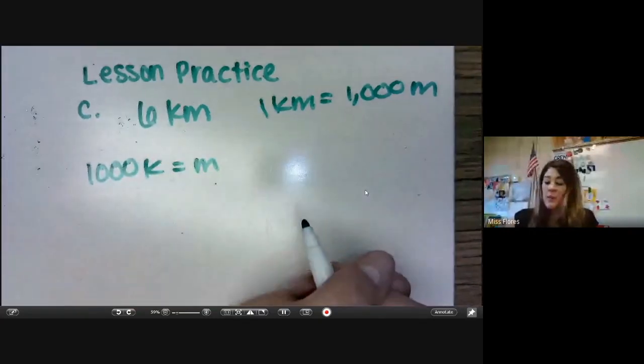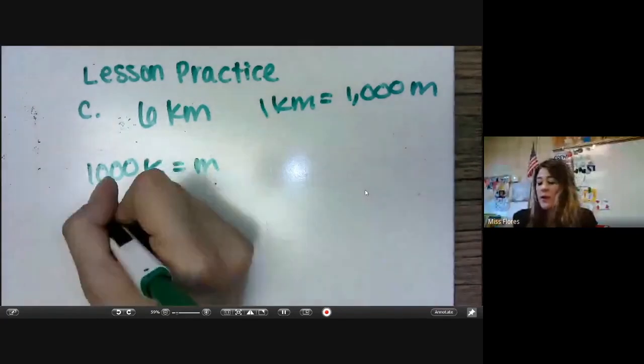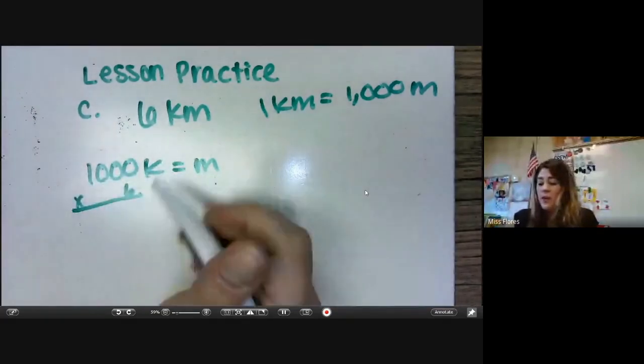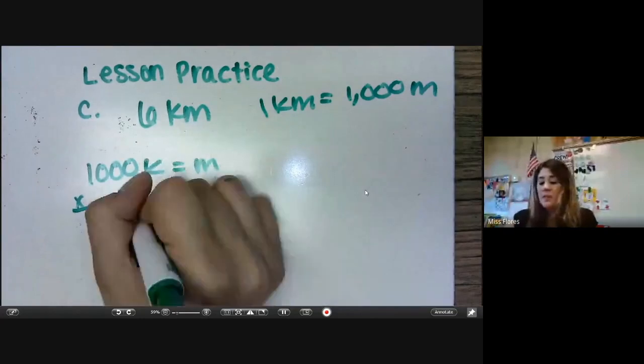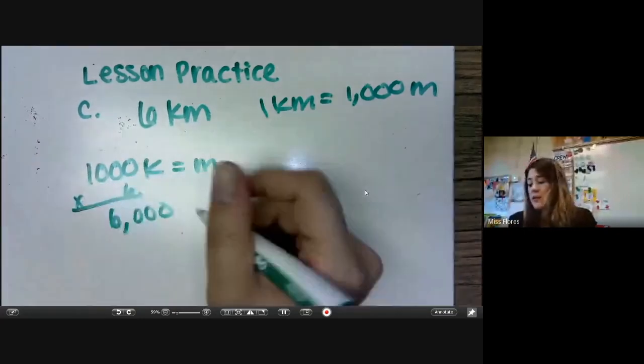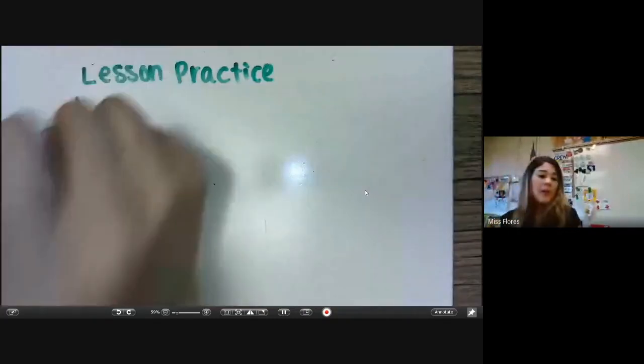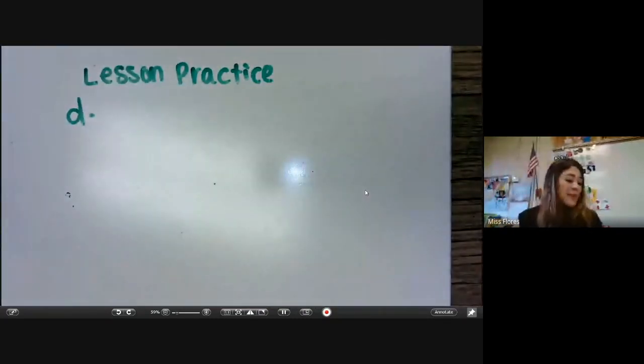So in this case, we have six. So we're going to multiply 1,000 times six. We can add the zeros, one, two, three, and six times one is six. So that means we get 6,000 meters.